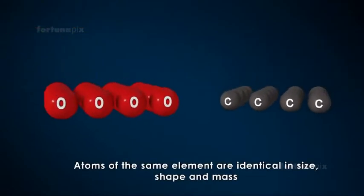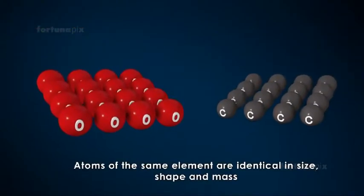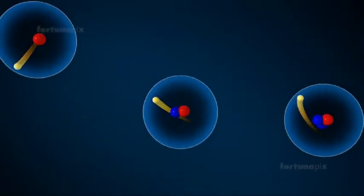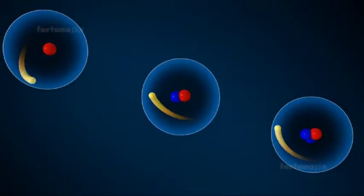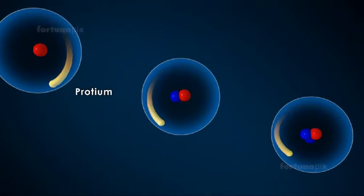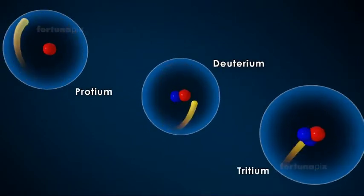Atoms of the same element are identical in size, shape, and mass. It was later found that atoms of the same element can have different masses, as in isotopes of hydrogen such as protium, deuterium, and tritium.